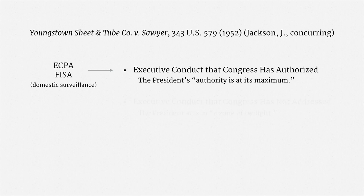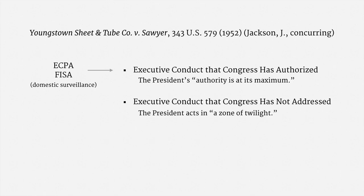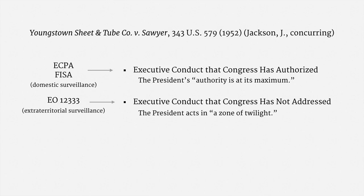The second category is where Congress just hasn't addressed an issue. In those areas, the President acts in a zone of twilight. The scope of the President's inherent power is informed by historical practice and contemporary necessities. This is the area where Executive Order 12333 provides primary guidance, and it includes almost all foreign intelligence operations outside the United States. In surveillance debates, discussion of Executive Order 12333 surveillance usually means surveillance outside the United States that's not covered by ECPA or FISA.